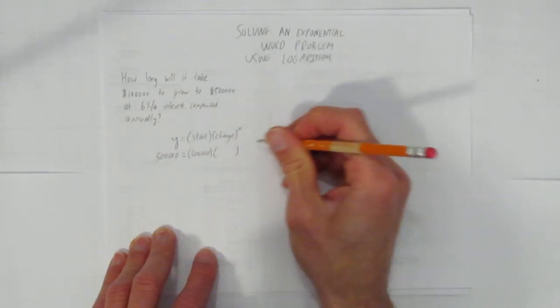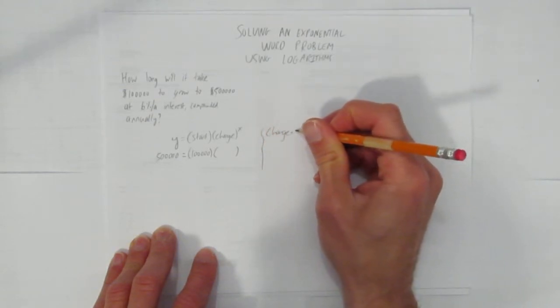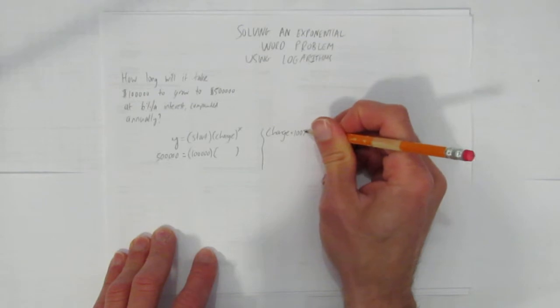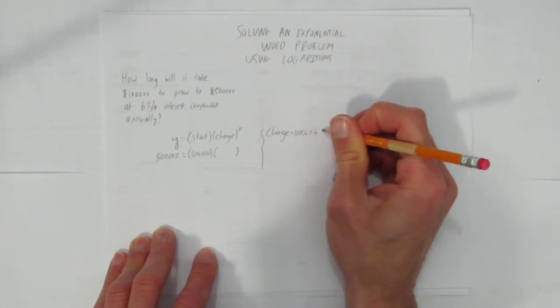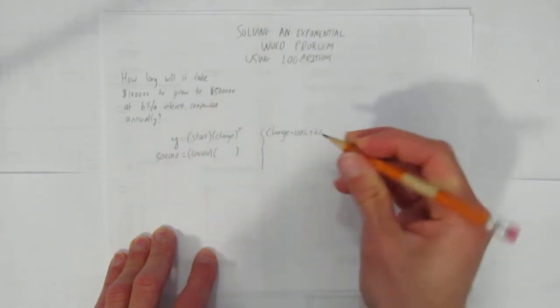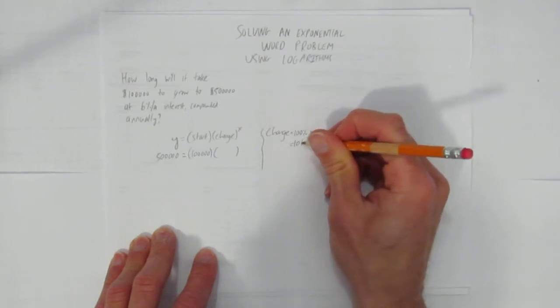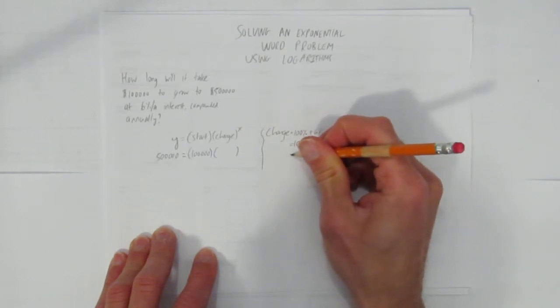And now for my change. Just in case, you don't have to show this work, but the change is going to be you have 100% of your money each year, plus you add on 6% because it's 6% interest, so that's 106%.